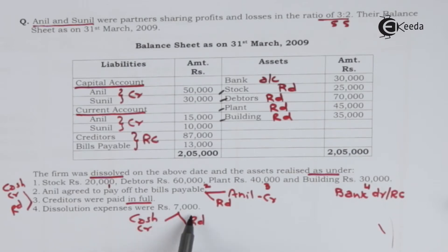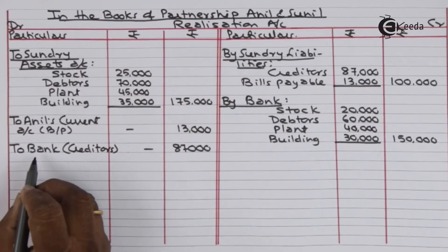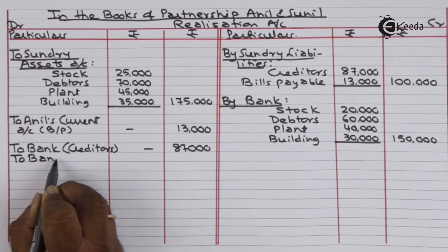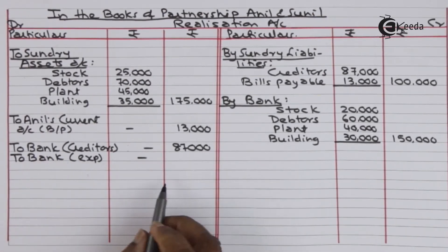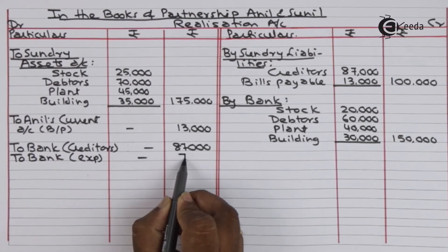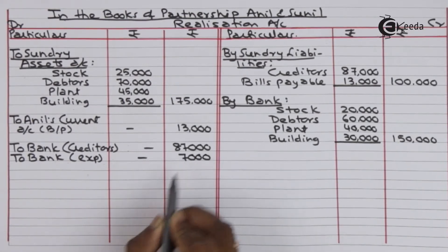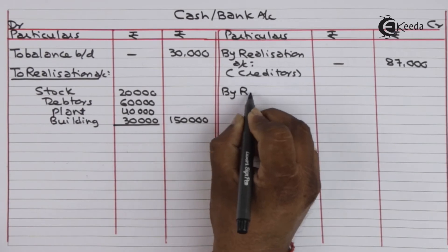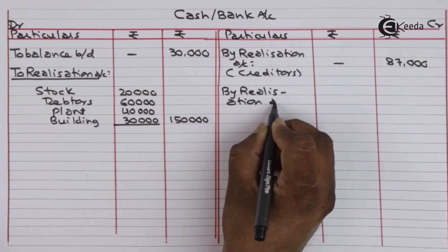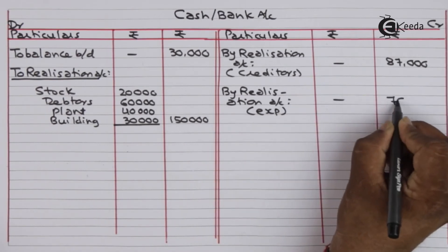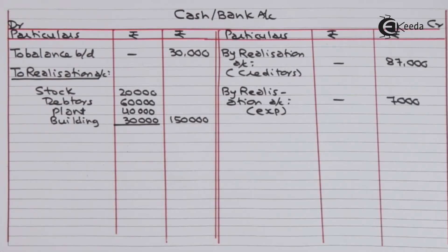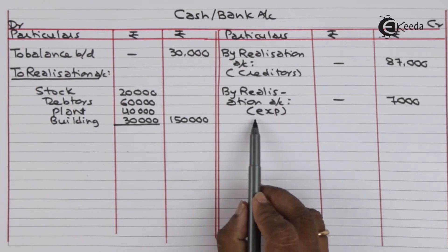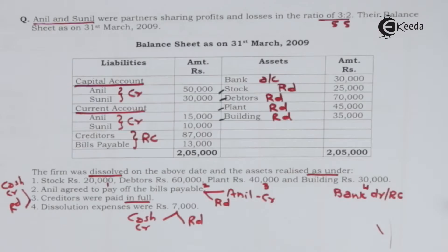Dissolution expenses were 7,000 — realization account debit, to bank, expenses paid — 7,000. This will also have an effect on the bank account on the credit side. Cash bank account credit — by realization account for expenses paid — 7,000. With this, all adjustments are completed.